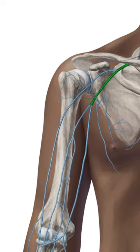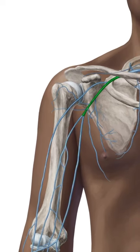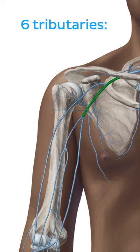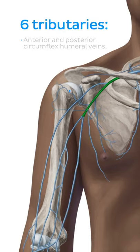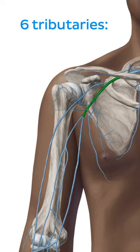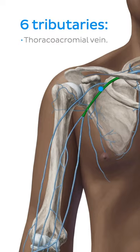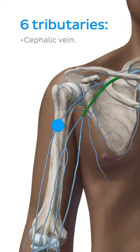It receives deoxygenated blood from 6 tributaries: the subscapular vein, the anterior and posterior circumflex humeral veins, the lateral thoracic vein, the thoracoacromial vein, and the cephalic vein.